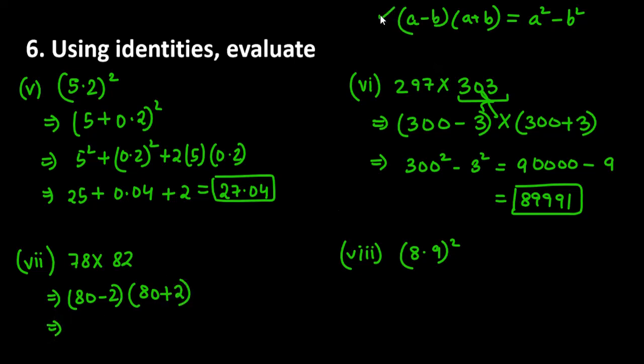For the 7th part, 78 times 82, one is plus and one is minus so it can be written as 80 square minus 2 square. 80 square is 6400 minus 4. Your final answer will be 6396.